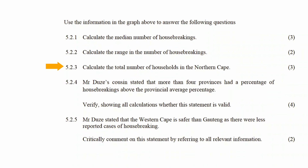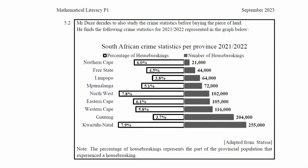In question 5.2.3, you have to calculate the total number of households in the Northern Cape. Remember the note that stated that the percentage of house break-ins represents the part of the provincial population that experienced a house break-in. This means that 6% of the population of the Northern Cape experienced a house break-in. If 6% represents the part of the population that experienced a house break-in, then 100% represents the total population of the entire Northern Cape. We also know from the data that there were 21,000 house break-ins in the Northern Cape, which represents the 6% of the population that experienced a house break-in.